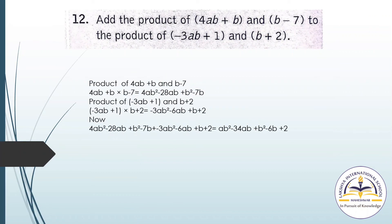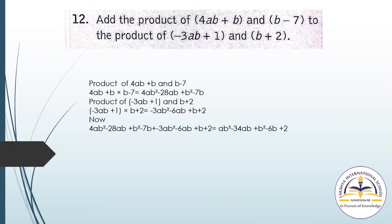Question number 12: Add the product of (4ab plus b) and (b minus 7) to the product of (minus 3ab plus 1) and (b plus 2). Find each product separately, then add the two results to get the final answer.